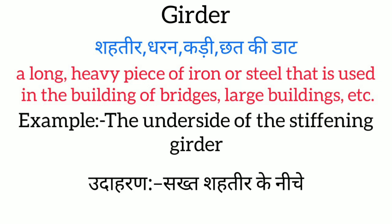Girder ka English meaning hai: a piece of iron or steel that is used in the building of bridges, large buildings, etc. Aaj ise example se samajhte hain: 'the underside of the existing girder' — yahan girder ka matlab shahteer se hai.